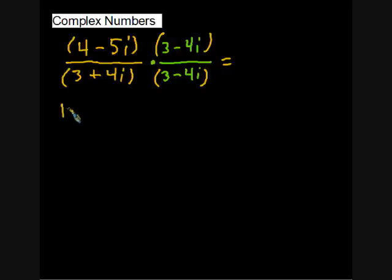On top, 4 times 3, that gets us 12. 4 times negative 4i, that's minus 16i. Negative 5i times 3, negative 15i. And negative 5i times negative 4i, that's plus 20i squared.